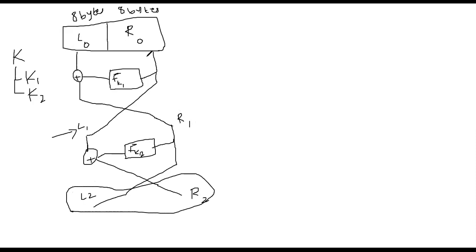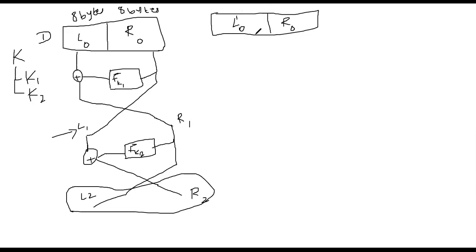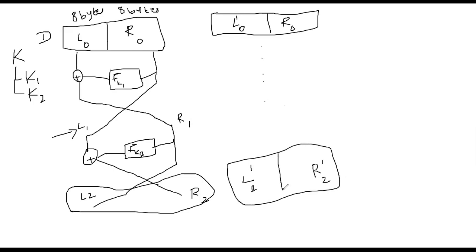Consider this scenario: suppose you have another dataset. Here is one block D and another block D2. Suppose for the second block, the right-hand eight bytes are the same R0, but the left half is different — call it L0 prime. If you run the Feistel network on this input you get some gibberish output, but there is a connection between these two outputs. You get L2 prime and R2 prime from the second Feistel network run, and I'm going to show you that connection.